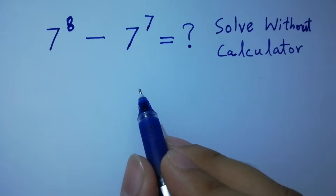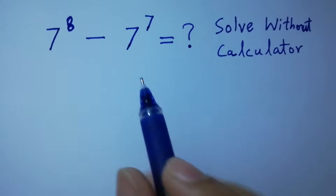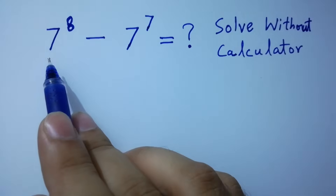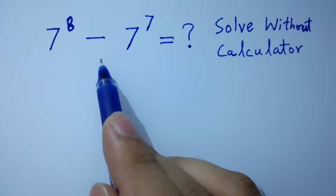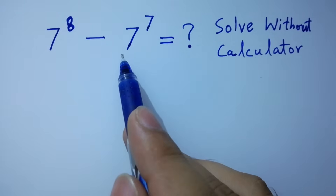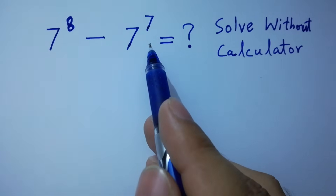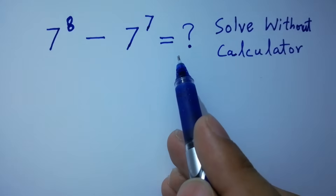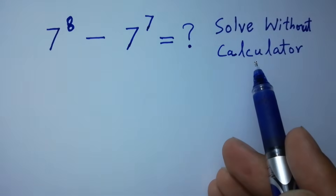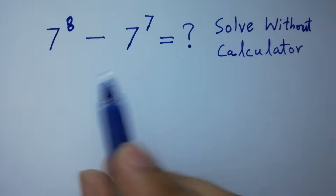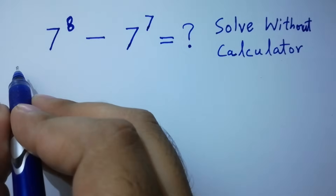Hello friends! 7 to the power 8 minus 7 to the power 7 equals what? Solve without calculator. Let's have a solution.